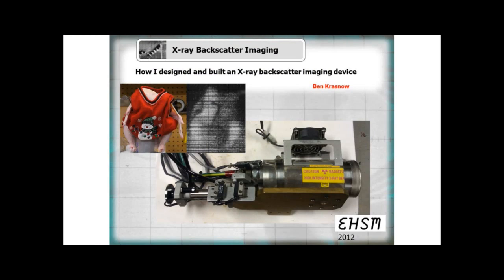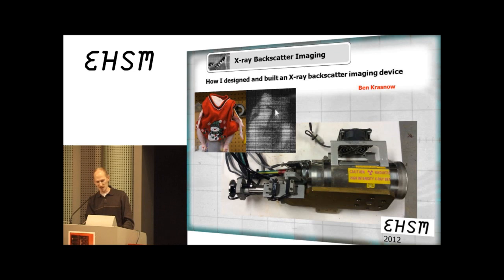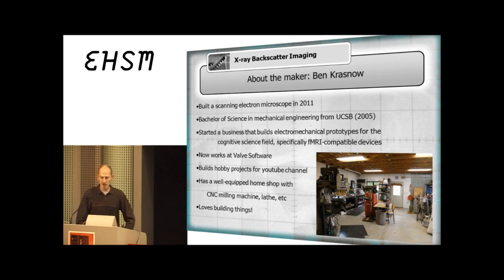I've got a picture up there — how many of you have seen the video of the backscatter detector? You've seen the chicken. This is my friend the chicken, simulating a person wearing a sweater. If you've gone through an airport in the US recently you might have encountered one of these backscatter imaging devices designed to find metal objects hidden on your body through your clothing. I put an Allen key in front of the chicken and scanned it with the backscatter imager.